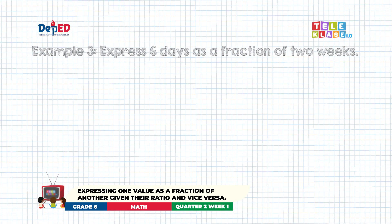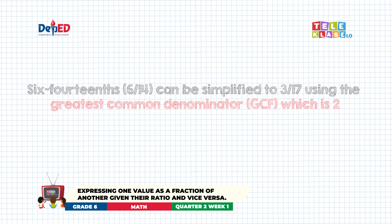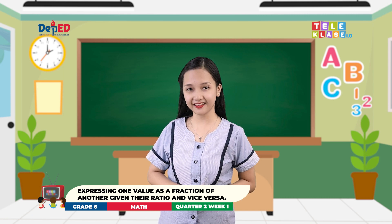Example number three: express six days as a fraction of two weeks. Before expressing six days as a fraction of two weeks, let us change weeks into days to make the units similar. We have seven days in a week. Therefore, there are fourteen days in two weeks. Thus, the fraction will be six-fourteenths. Six-fourteenths can be simplified to three-sevenths using the greatest common factor, which is two.